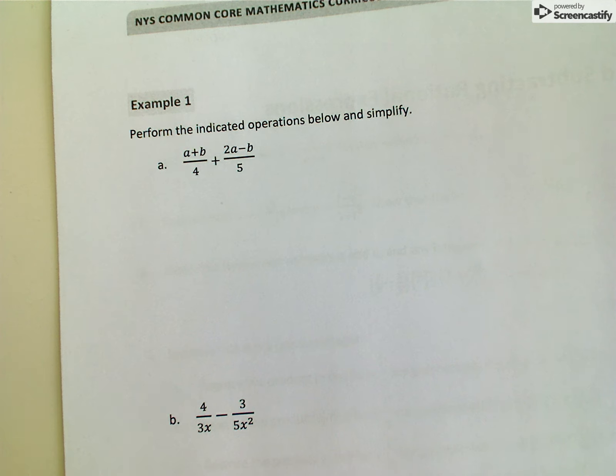On lesson 25, example 1a, we are asked to do an addition problem of these two rational expressions. We see that there is not a common denominator at this point, so we would like to find a common denominator or make each of these rational expressions have the same denominator.